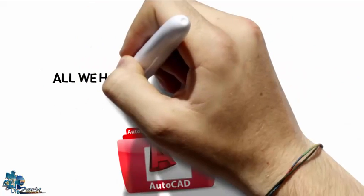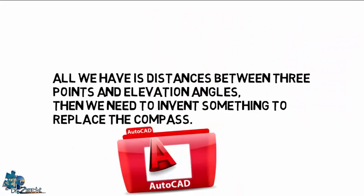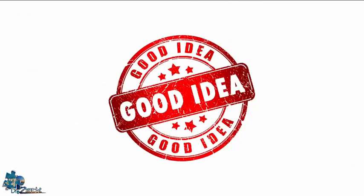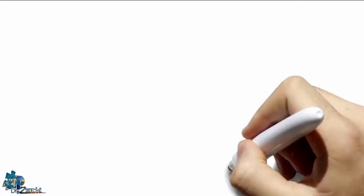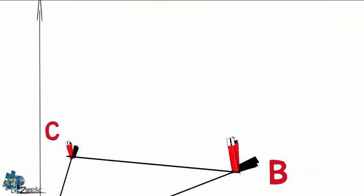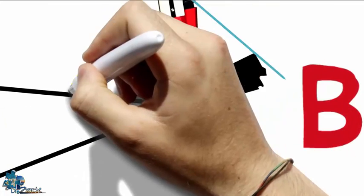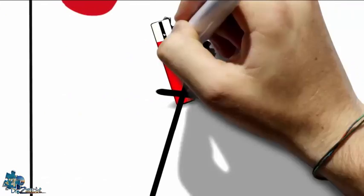Now let's go back to the experiment. If we are going to draw this in AutoCAD and all we have is distances between three points and elevation angles, then we need to invent something to replace the compass. I got a pretty good idea. So these are the three points A, B, and C. I'm going to place three objects on each point to get the shadows and measure the elevation angles, and I'm going to measure the distances between these three points. This line should go to the lamp, but in AutoCAD we won't know the direction of the shadows.